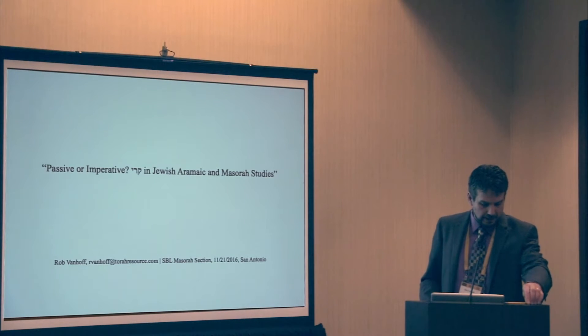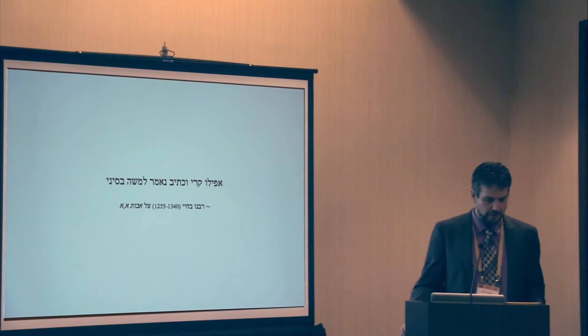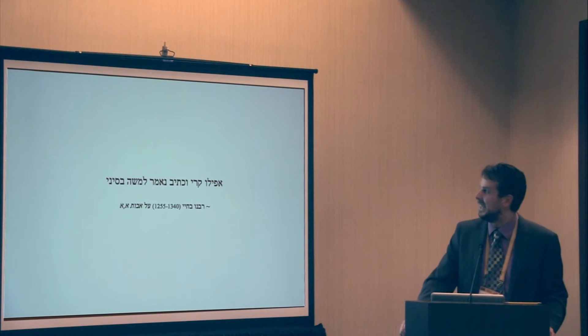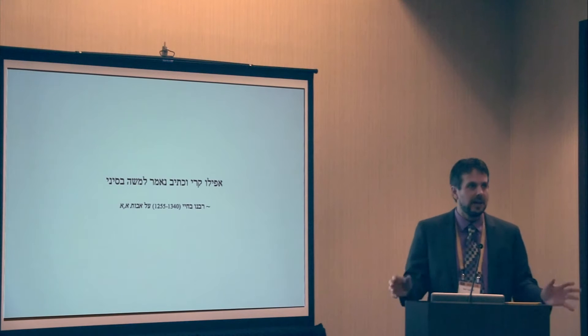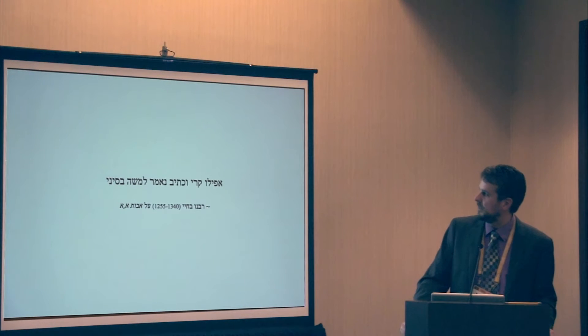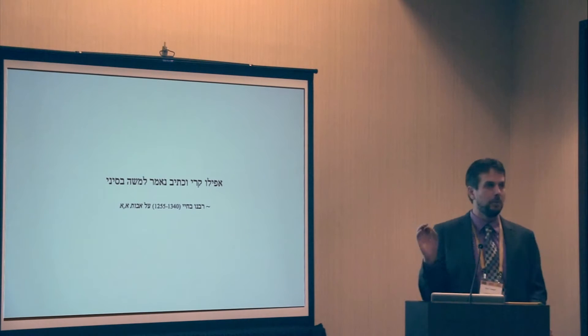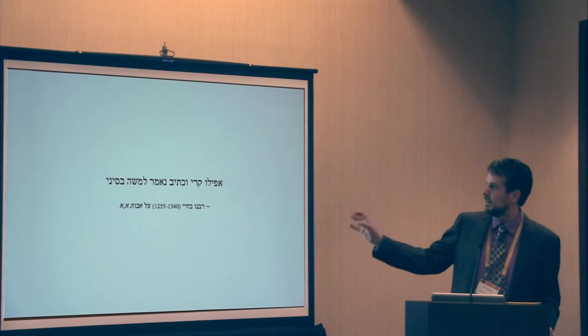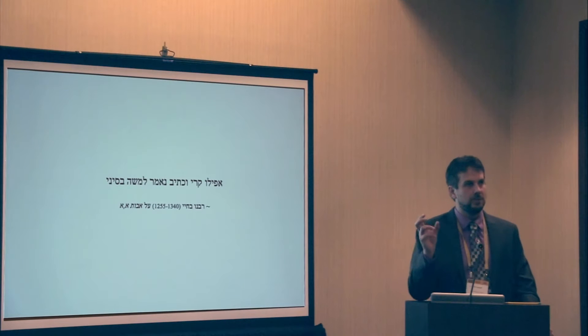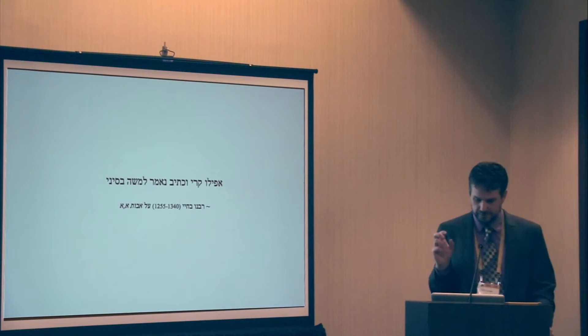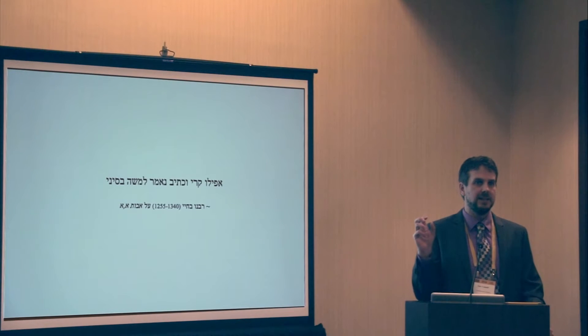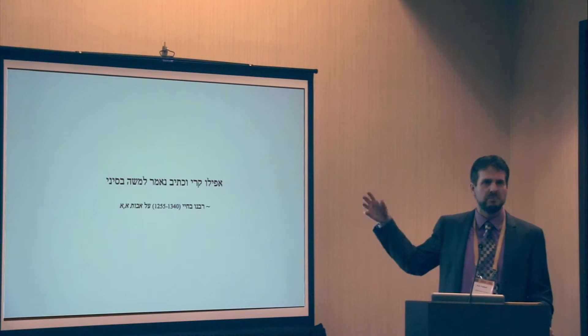Before we get to the handout, here's a text I want to prime the pump with. This is from Abachiyah ben Asher, who was a kind of an early Kabbalist, lived in the 13th century, early 14th century. In his commentary on Mishnah Avot, 1-1, Moshe Kibel Torah Mesinai, etc., he writes, afilu kariv kativ ne'amar l'moshe b'sinai. And you'll notice here ne'amar is in the singular. So here we have a data point where a rabbi in this time frame has a conception of kariv kativ as some sort of unit.